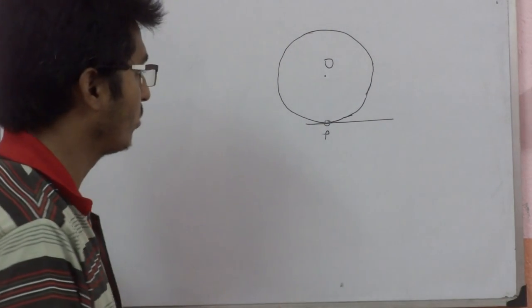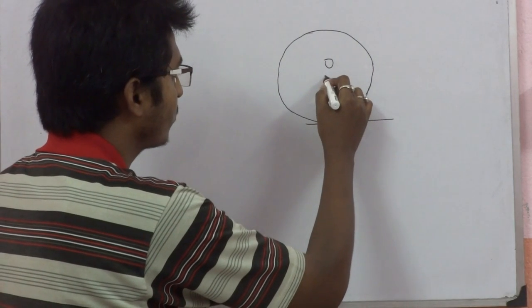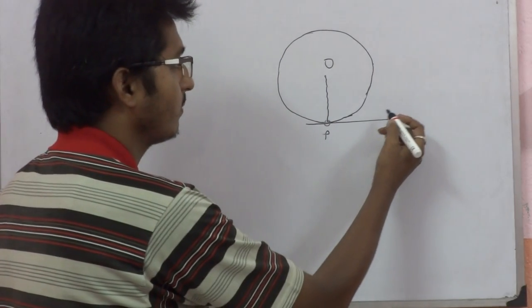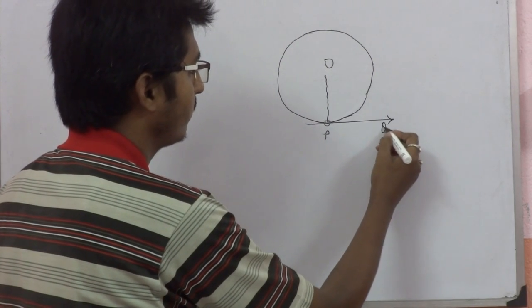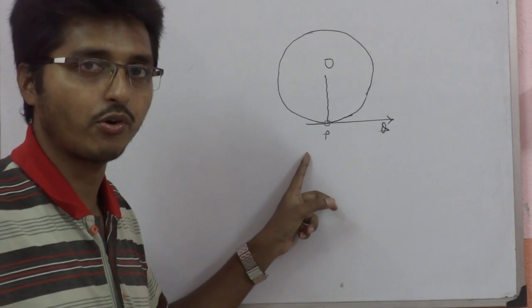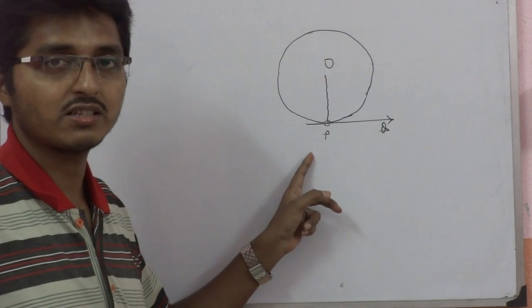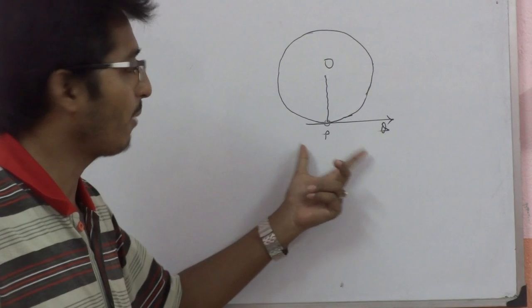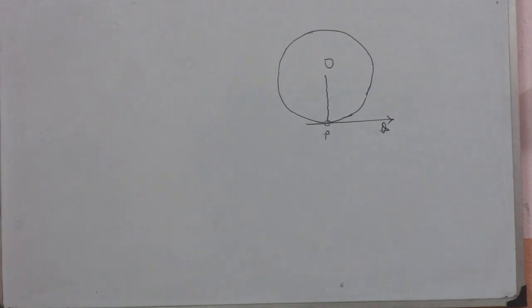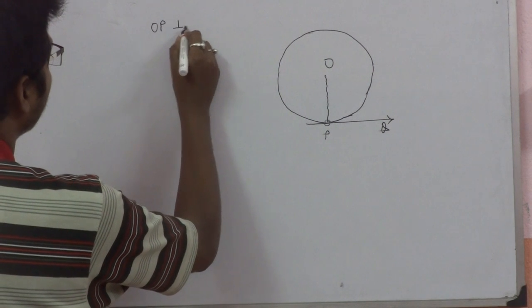Tangent to the circle at the point P and O is the center of the circle. We have to show that the tangent and the radius through the point of contact - P is called point of contact and this is the tangent. So we have to show that OP is the smallest distance and OP is perpendicular to PQ.